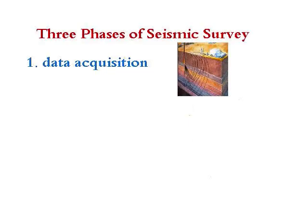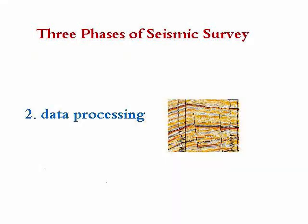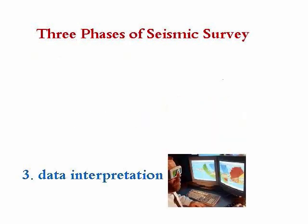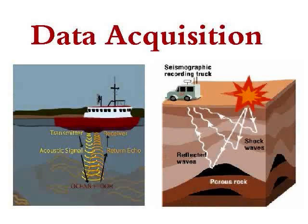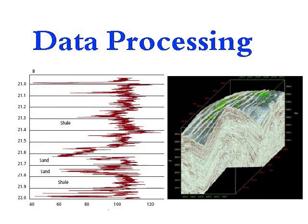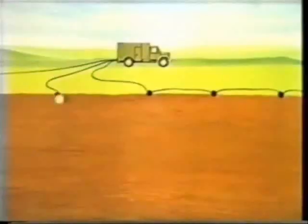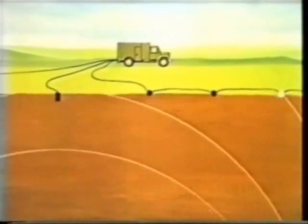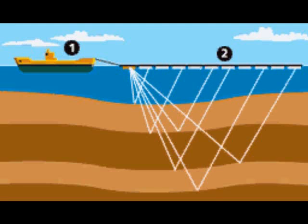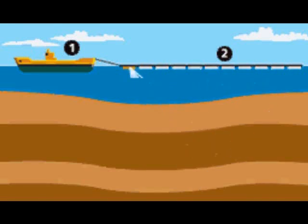The names of the three phases are data acquisition, data processing, and data interpretation. Data acquisition is where we get or collect the information. Data processing is where we use the acquired data to make measurements and calculations, and data interpretation is where we analyze, evaluate, and make conclusions about what all the data means. In data acquisition, we go into the field on land or offshore to actually make measurements with our seismic equipment.